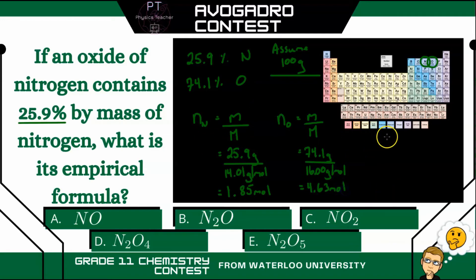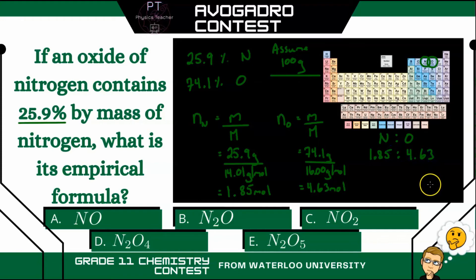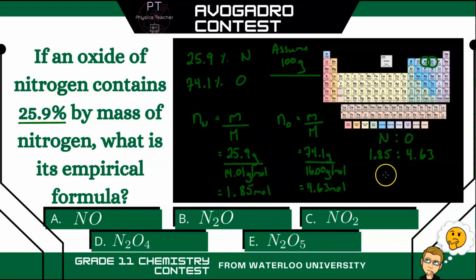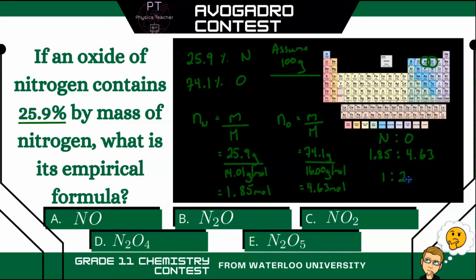So our ratio of nitrogen to oxygen in moles is 1.85 and 4.63. But if we want to find the empirical formula, we need these to be nice integers. So let's start by taking the smallest number, which is 1.85, and divide it by itself — giving us 1. Then take 4.63 and divide it also by 1.85, which gives us 2.5.